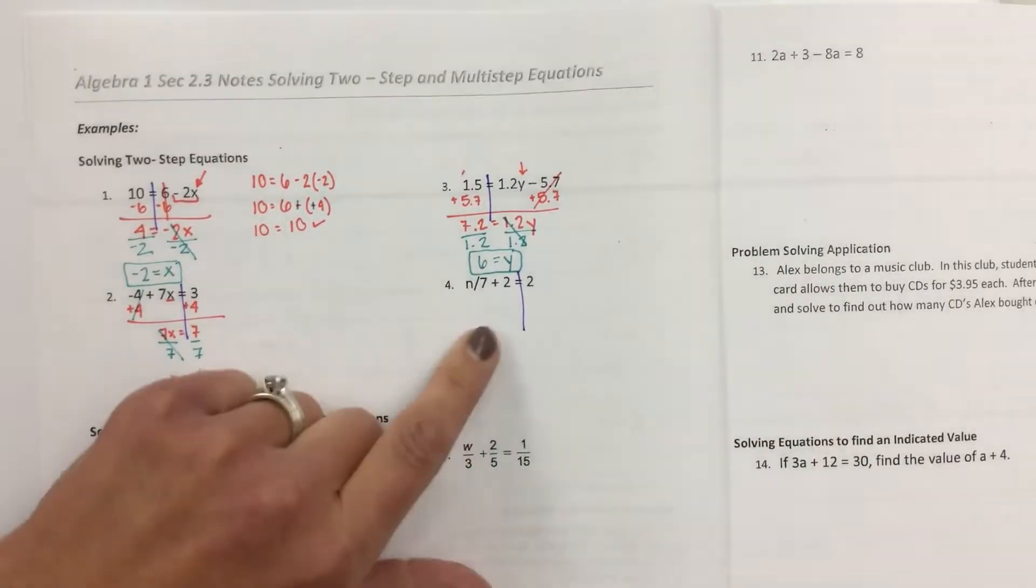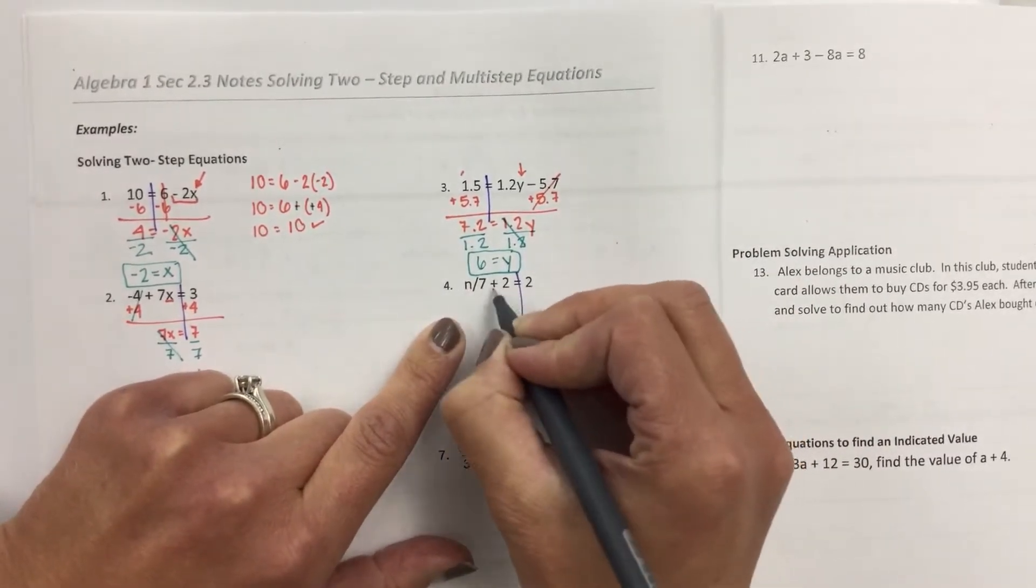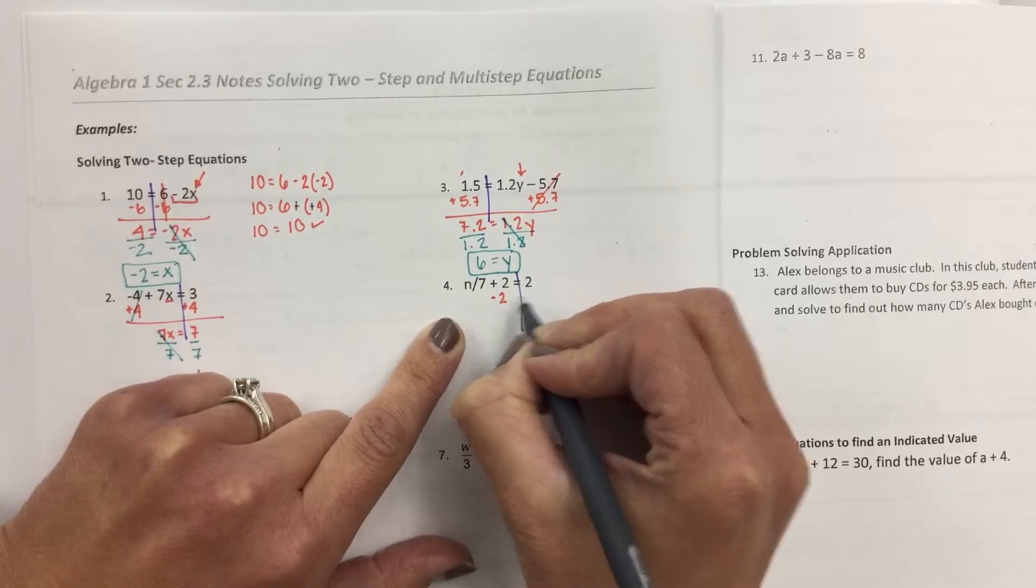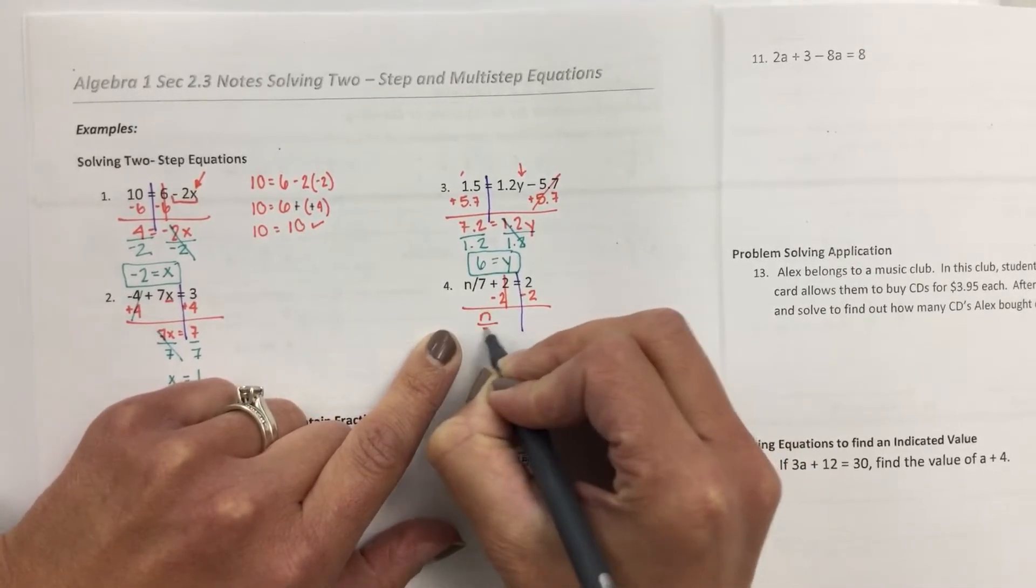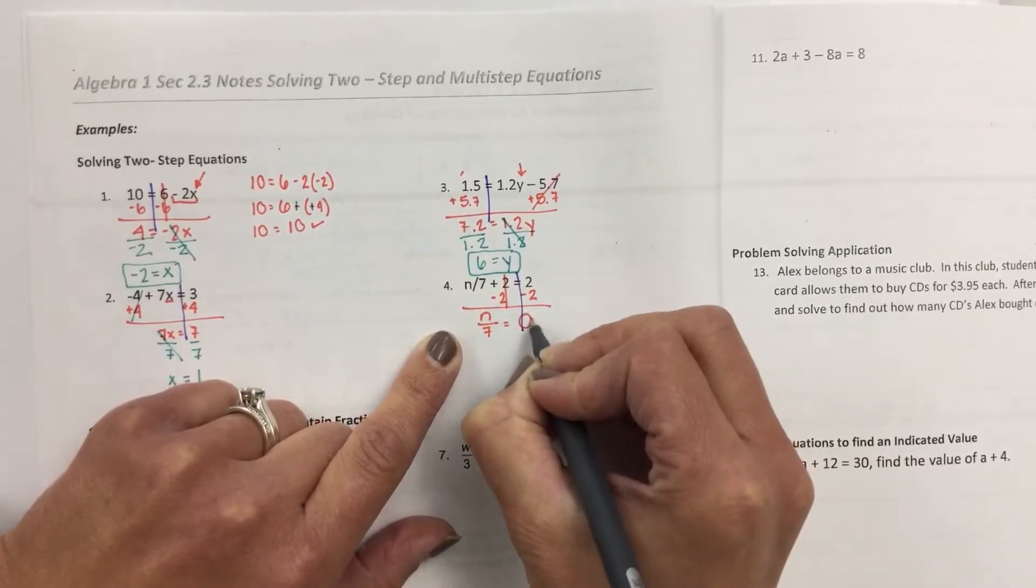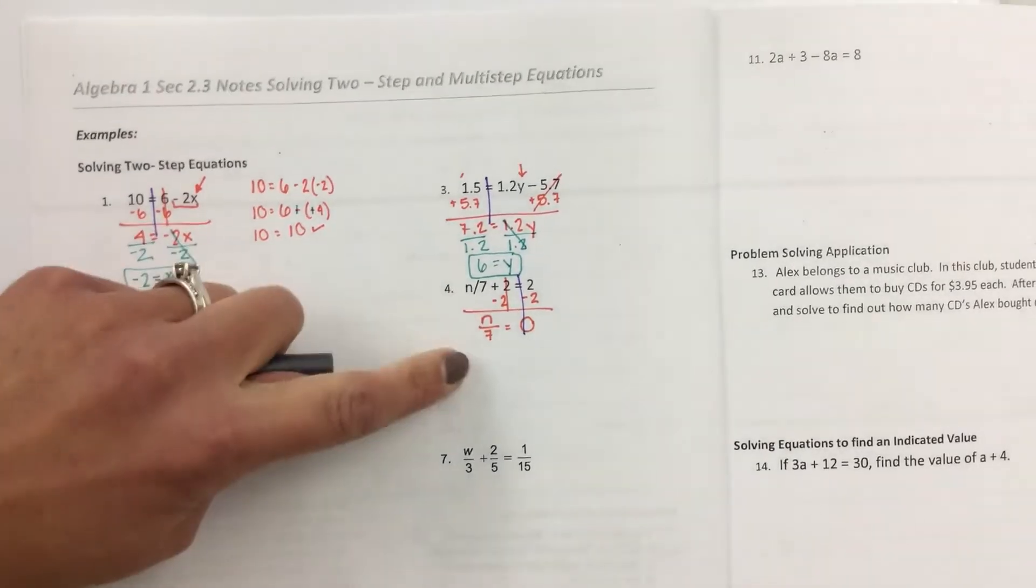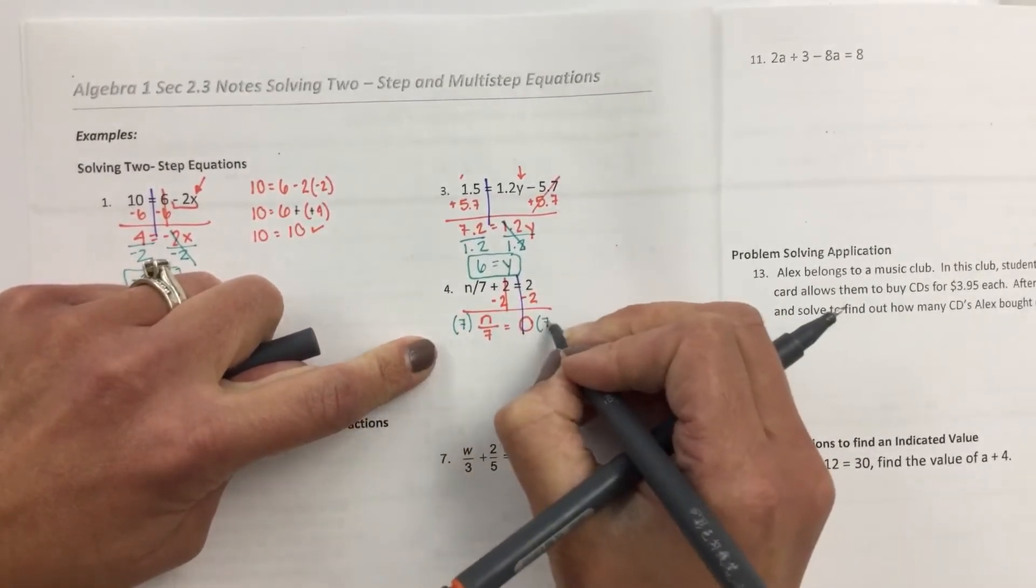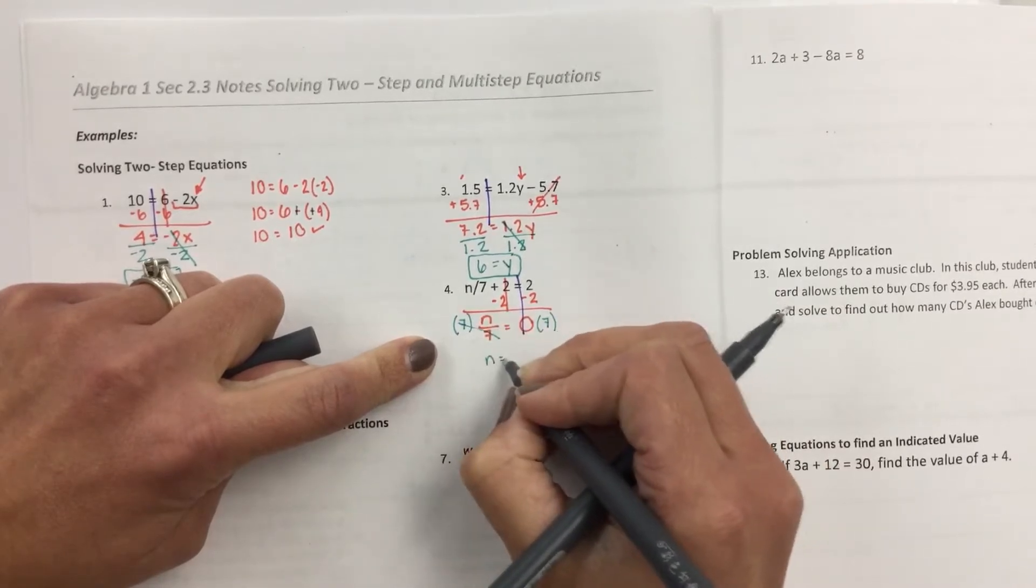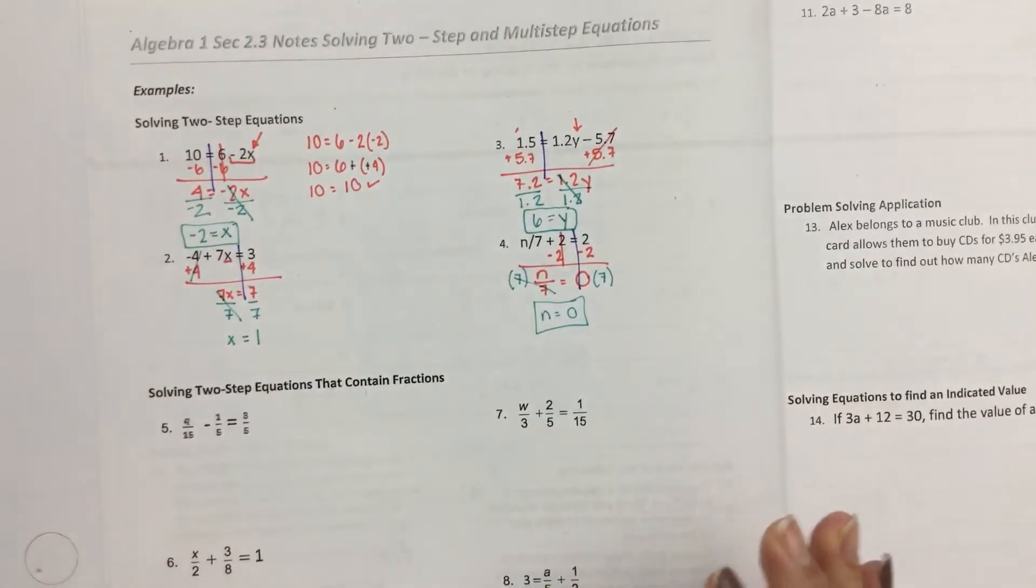And then this one, I couldn't type this up very well, but this is n divided by 7 plus 2. So the first thing you're going to do is get rid of the 2. So n divided by 7 equals 2 minus 2 is 0. And then n divided by 7, you are going to multiply by 7. n equals 0 for your final answer. So those are just basic two-step equations.